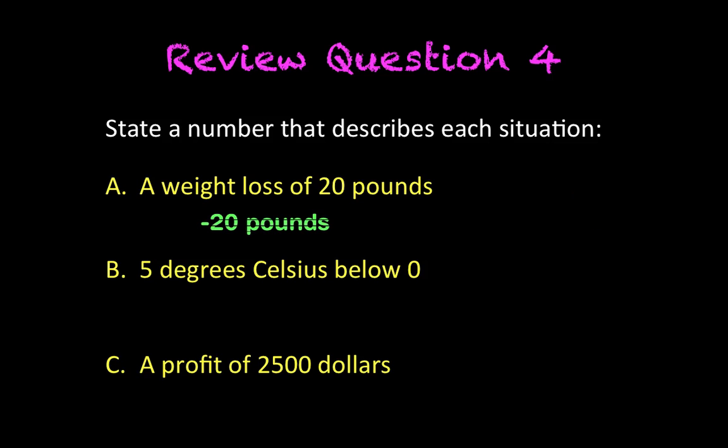All right, so A: a weight loss of 20 pounds, so that word 'loss' means negative, so negative 20 pounds. B: 5 degrees Celsius below zero, so it's below, so it is negative 5 degrees Celsius. And C: a profit of $2,500, so that's positive $2,500.